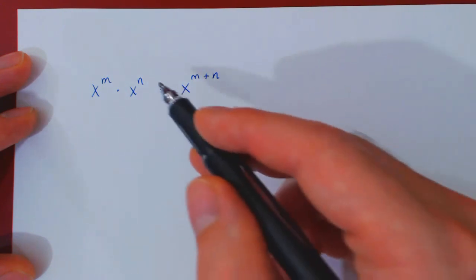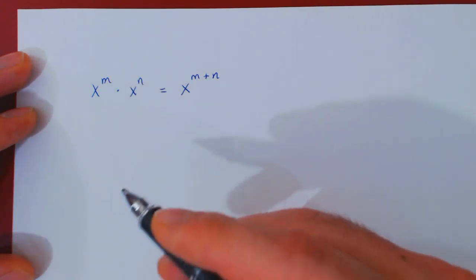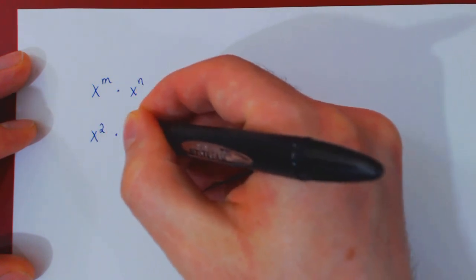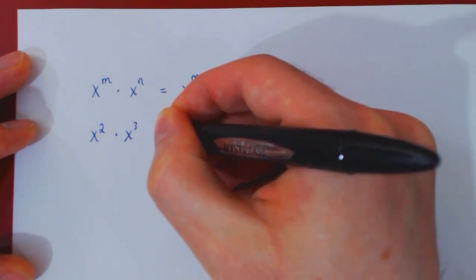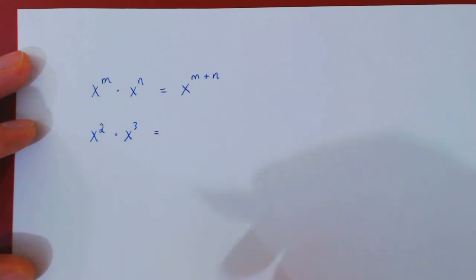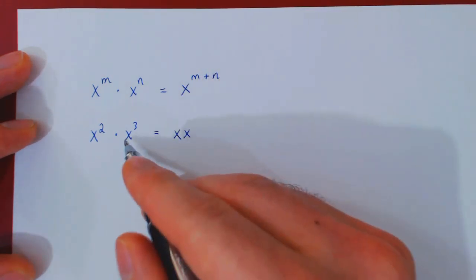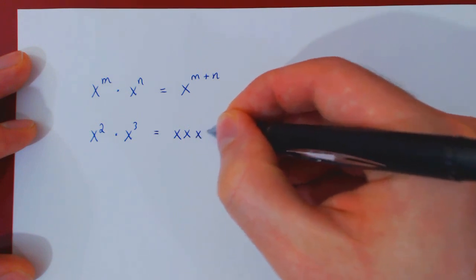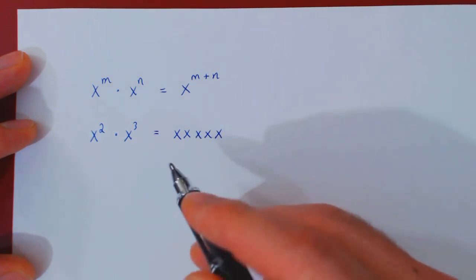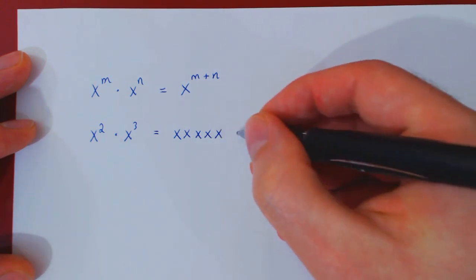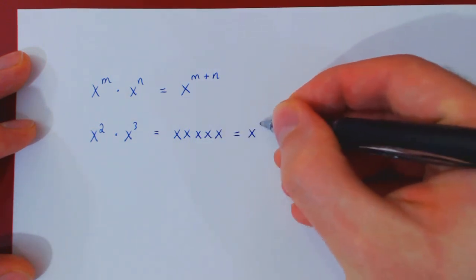let's look at a special example, where m is 2 and n is 3. So if you have x squared times x cubed, well, let's expand both exponents. x squared is x times x. x cubed is x times x times x. And quite obviously, we have 1, 2, 3, 4, 5 x's, which is by definition, x to the 5.